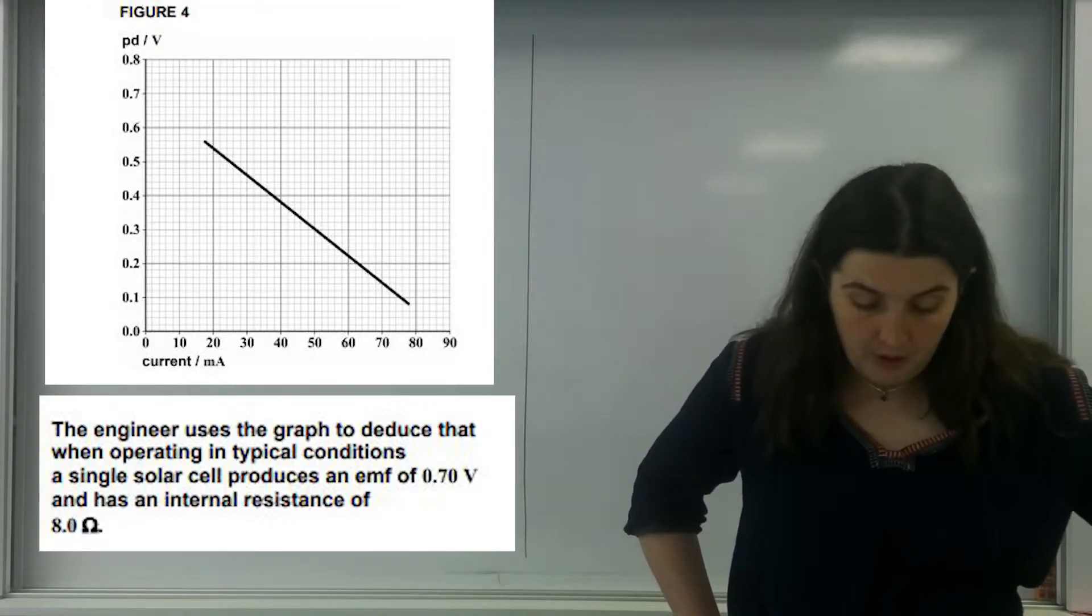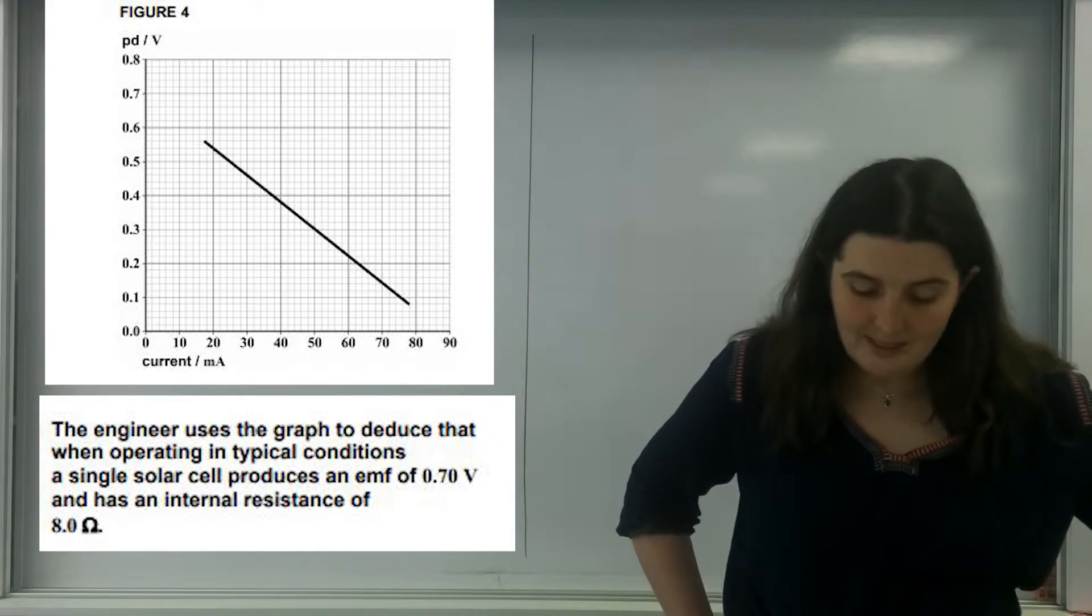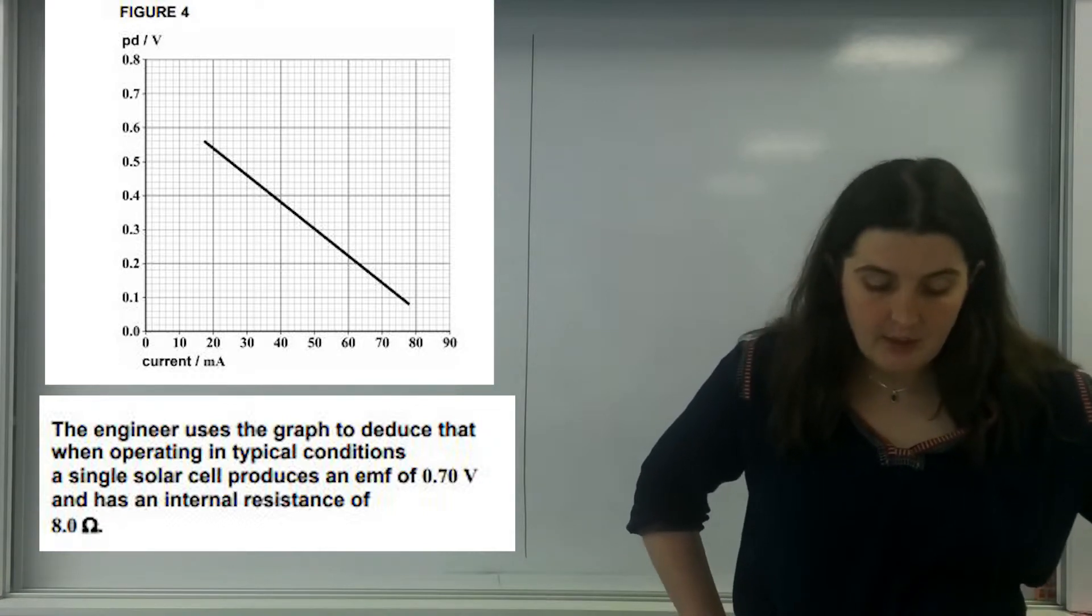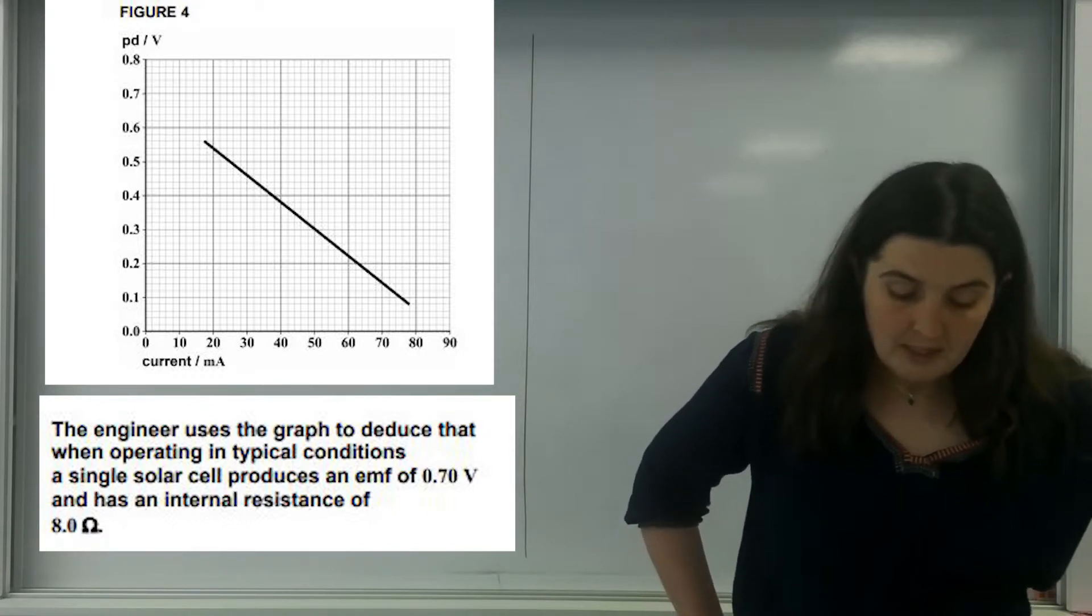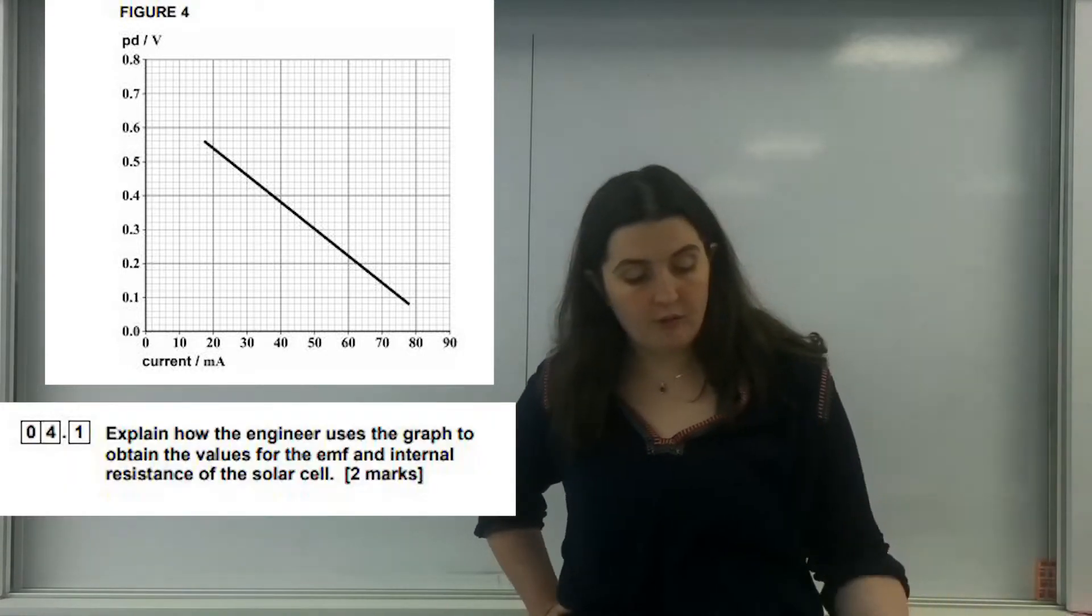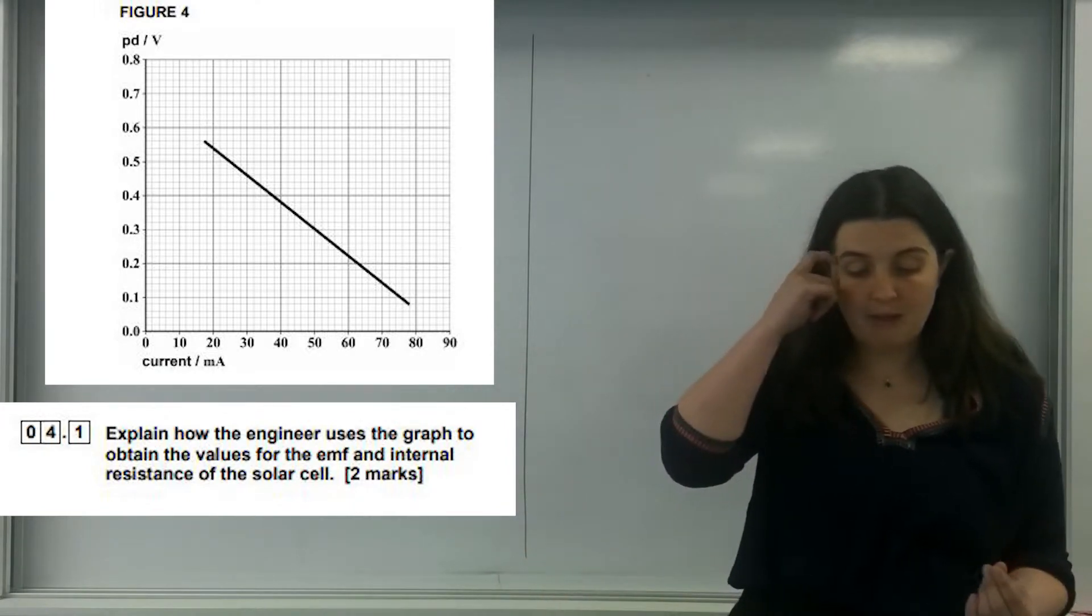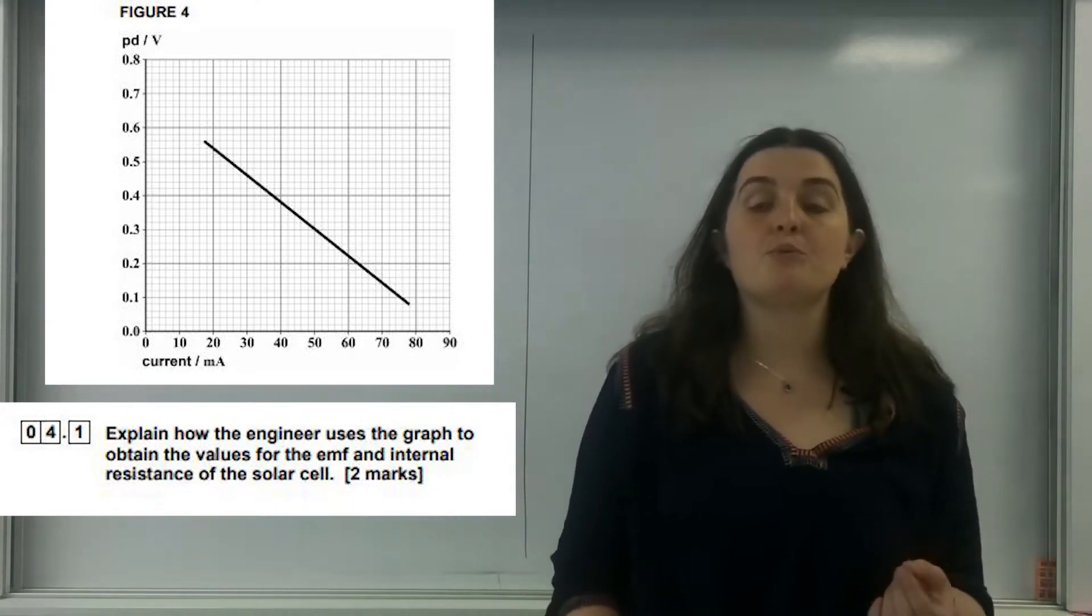The engineer uses the graph to deduce that while operating in typical conditions, the single cell produces an EMF of 0.7 and has an internal resistance of 8 ohms. Explain how the engineer uses the graph to obtain the values for the EMF and internal resistance. This is worth two marks.